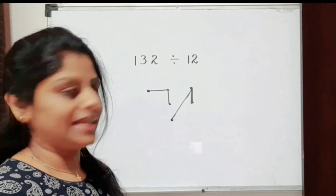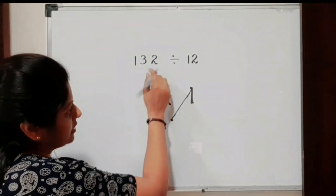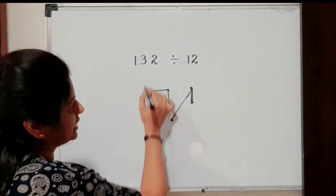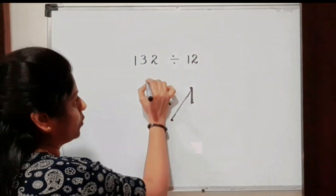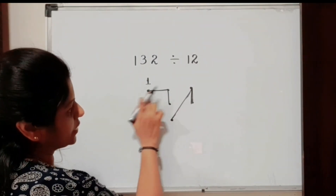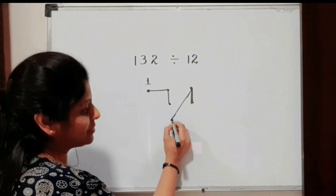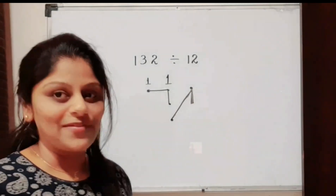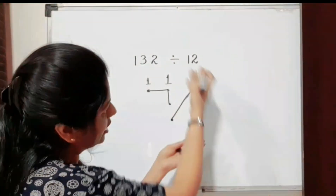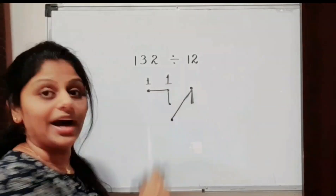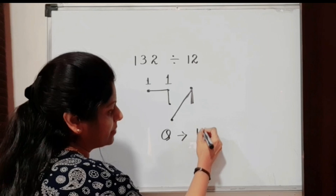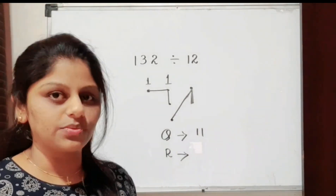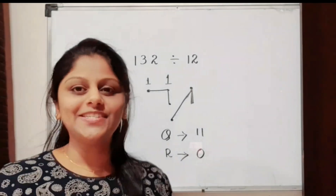Connect all the dots with lines using this method. Next, in the third step, check in each column how many new line beginnings we have drawn. In the first column we have one new beginning. In the second column there is also one new beginning. In the third column we have no new beginning. Therefore our quotient is 11. Do we have any dots remaining unused? No — we joined all the dots. Therefore our remainder is zero.